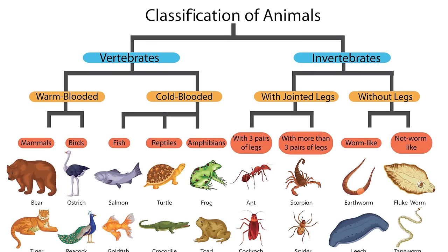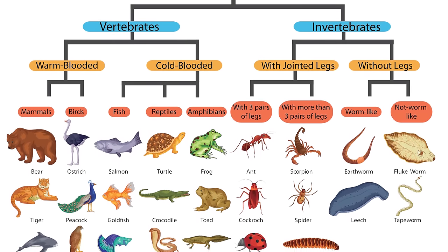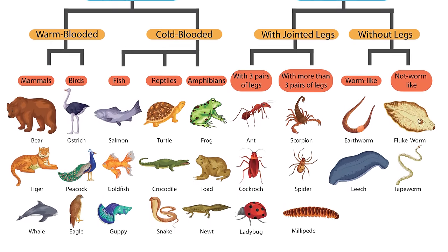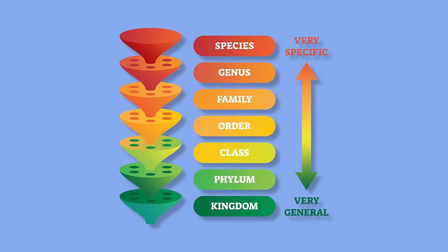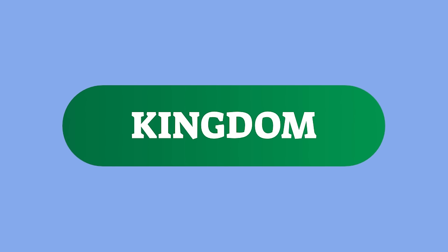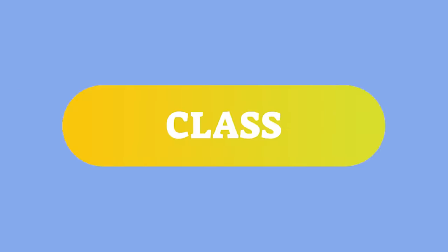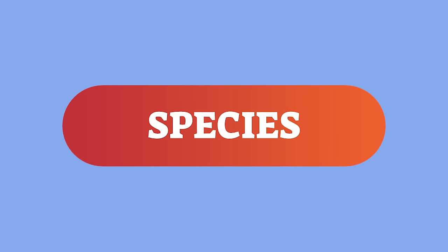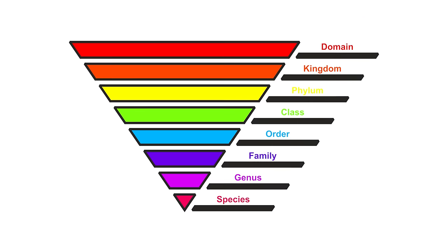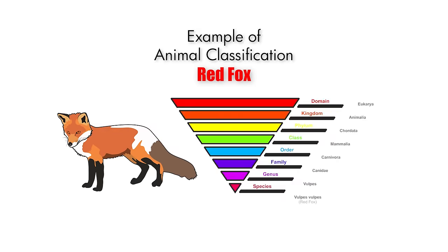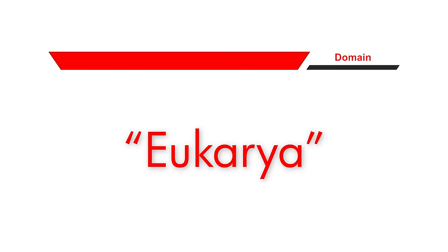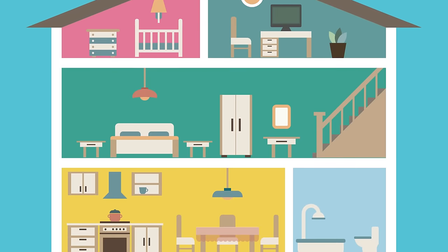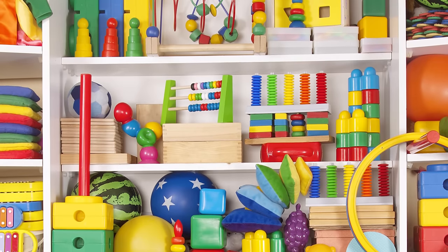Classification breaks very large groups down into smaller groups, making them easier to study. Scientists classify animals, plants, and insects based on things they have in common. Taxonomy means to classify living things. Scientists and biologists use a taxonomy chart that includes domain, kingdom, phylum, class, order, family, genus, and species. The chart looks like an upside-down triangle — the domain level at the top is the biggest because it represents the biggest group.